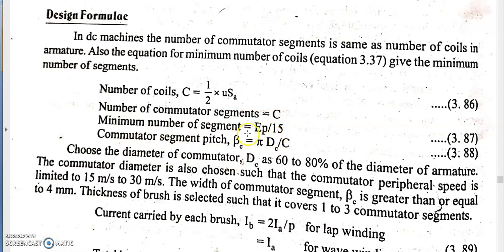Here E is the EMF and P is the number of poles. This equation is derived based upon the peripheral velocity of the armature, which is 15 to 30 meters per second. The commutator segment pitch is given by πDC/K, where DC is the diameter of the commutator and K is the number of commutator segments — similar to how πD/P is the pole pitch and πD/S is the slot pitch.